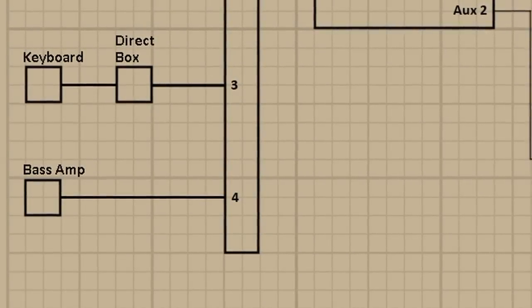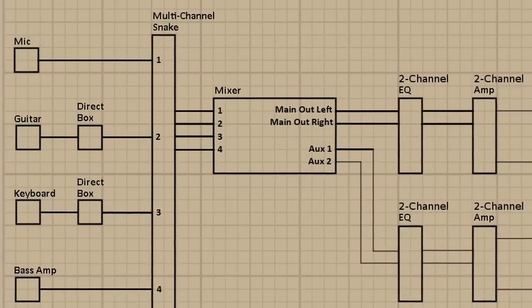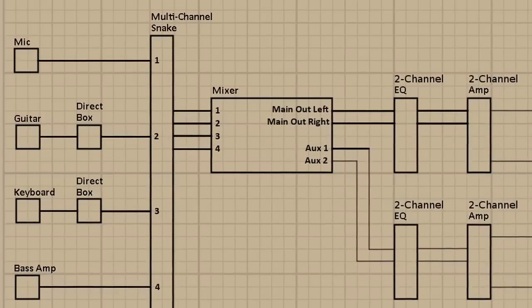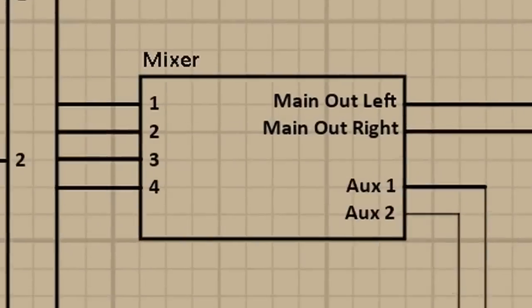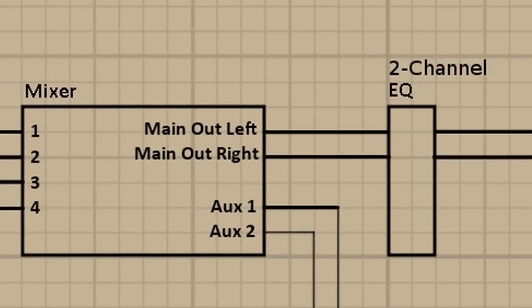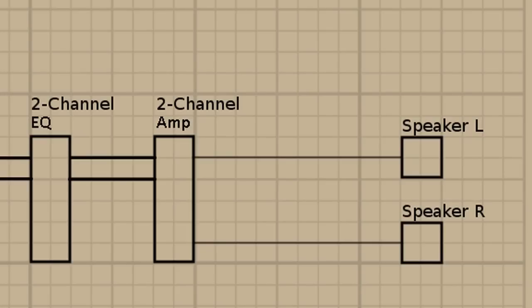Now let's just say this snake is a 300-foot snake. So at the other end, 300 feet away, we will have channels one, two, three, and four plugged into channels one, two, three, and four on the mixer. So then we're going to have a left output and a right output. And then that's going to go to an EQ, so we can do some master EQing. Now this is where we would EQ for the room. And then, of course, we've got the two-channel amplifier, which is connected to a left speaker and a right speaker.